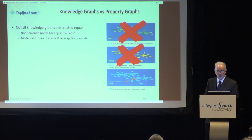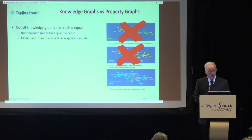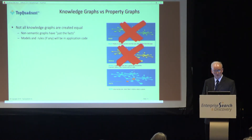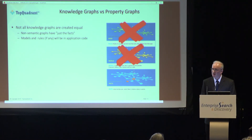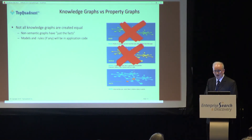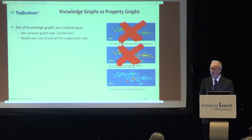That bit of logic and model information, if any, may be put into application code. That's the most common approach to handling that with regular property graphs.